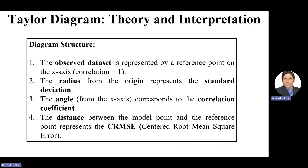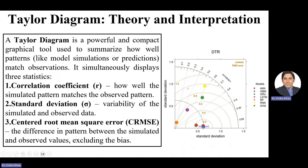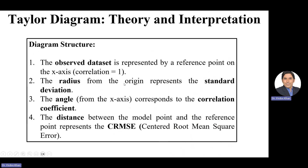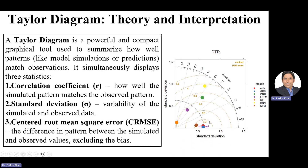Now let's look at the Taylor diagram structure more clearly. The observed dataset is represented by the reference point on the x-axis, where correlation equals one. The radius from the origin represents the standard deviation. The angle from the x-axis corresponds to the correlation coefficient. The distance between the model point and the reference point represents the CRMSE. So if a model has a higher correlation coefficient, lower CRMSE, and closely reproduces the standard deviation of observed data, we say that model is better.